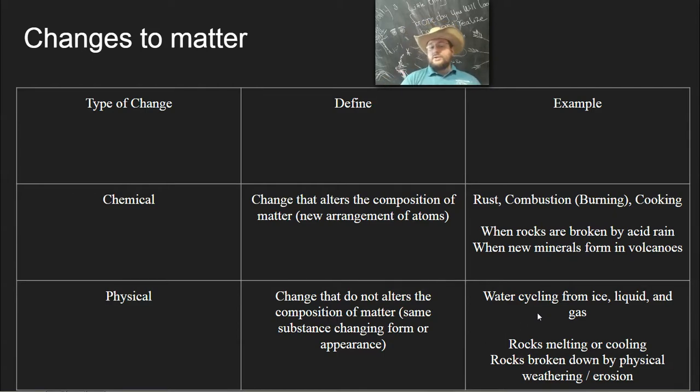Physical changes are changes that do not alter the composition of matter. You still have the same physical substance, the same chemical thing, but they may change the way they appear or act. For example, if you have ice, liquid, or gas, so water evaporating, water during condensation, water freezing, changes in the state of matter during the water cycle, those would be examples of physical changes.